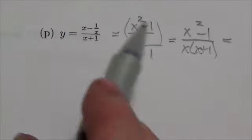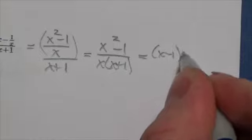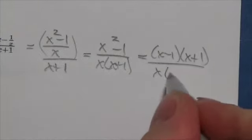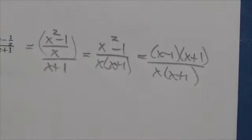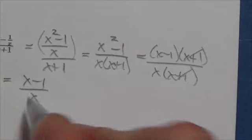And then notice the difference of squares here. So this becomes x minus 1 times x plus 1 over x times x plus 1. Okay, the x plus 1s cancel. And I am going to be left with x minus 1 over x.